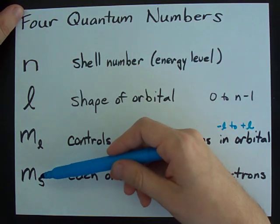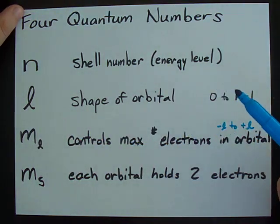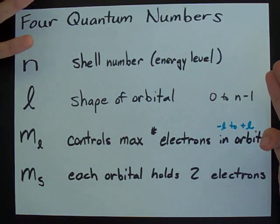MS, or the spin quantum number, is really only there because each orbital holds just two electrons.